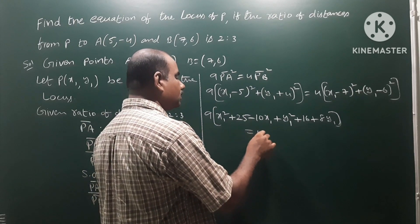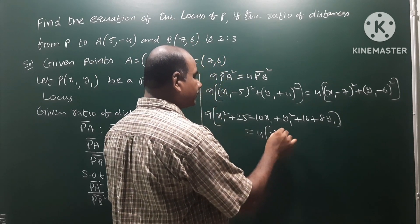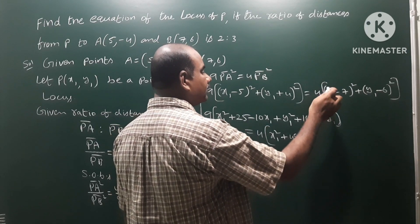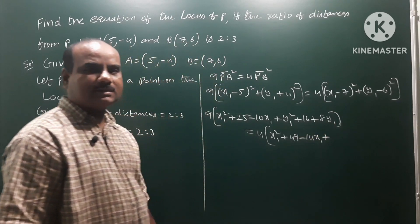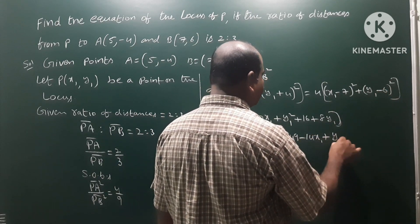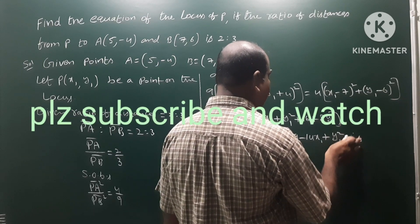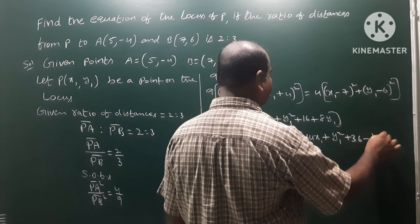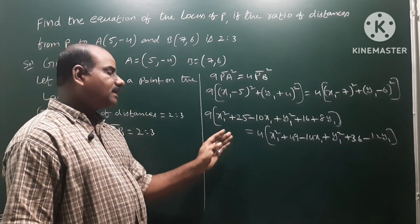On the right side, 4 into (x1 minus 7) whole square: expanding gives x1 square minus 14x1 plus 49. Then (y1 minus 6) whole square: expanding gives y1 square minus 12y1 plus 36. Multiplied by 4 on the right side.